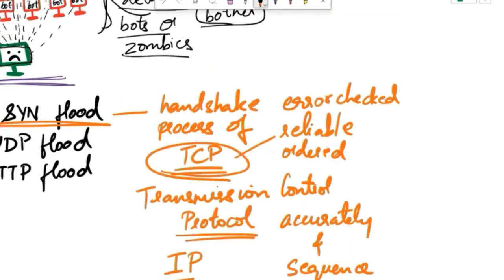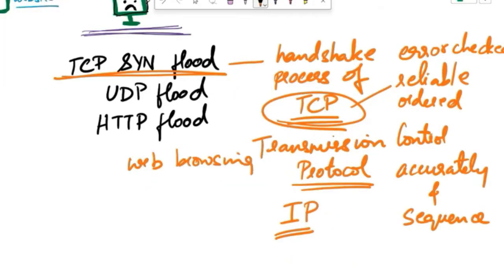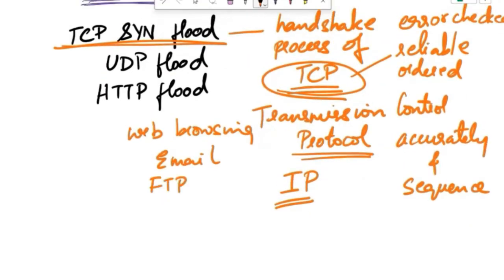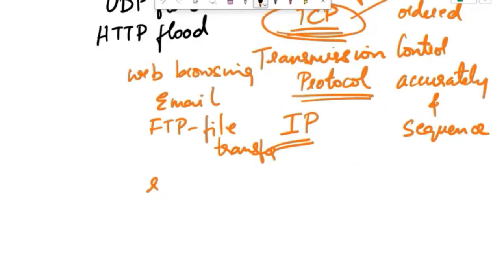It ensures that the data is delivered accurately and in correct sequence. TCP is a method used for sending and receiving data reliably over the internet. It makes sure that data gets to where it needs to go without errors and in the right order. Think of it like a reliable postal service for digital information. TCP is used for applications that require reliable data delivery such as web browsing, email, FTP that is file transfer, and remote access like SSH.